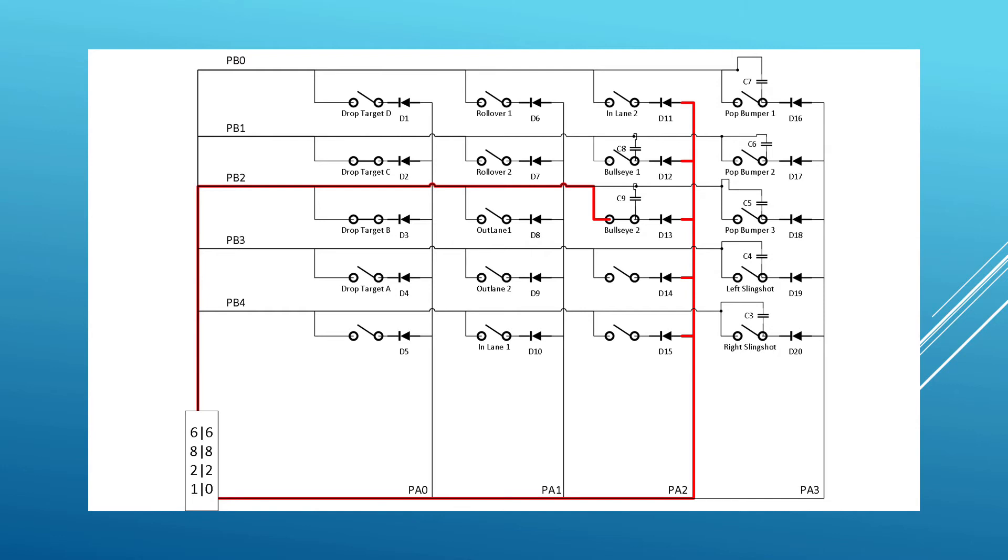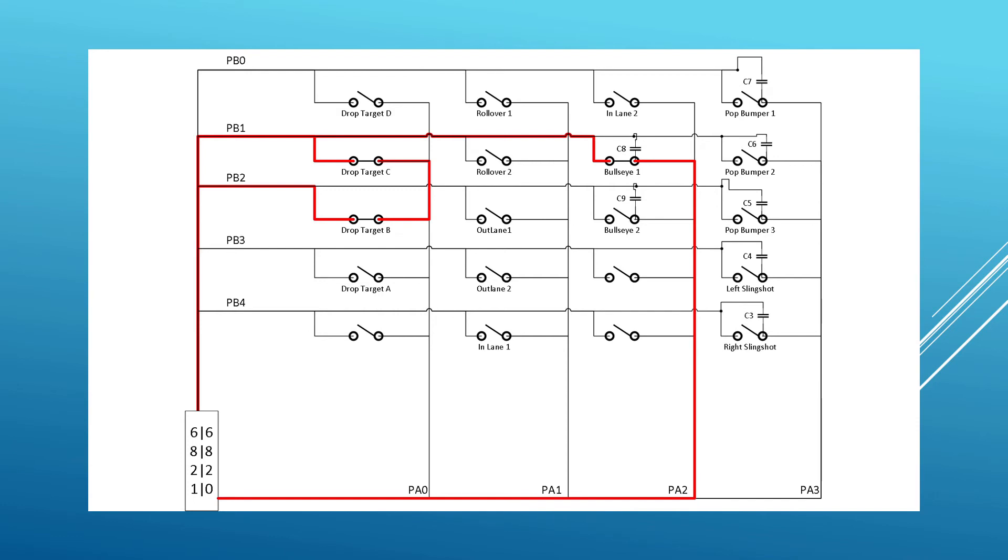For example, in this diagram, I've removed the diodes and shown a playfield that has both drop targets B and C down, and the ball has just struck bullseye 1. Without the diode, current travels backwards through the drop target C switch and through the drop target B switch.